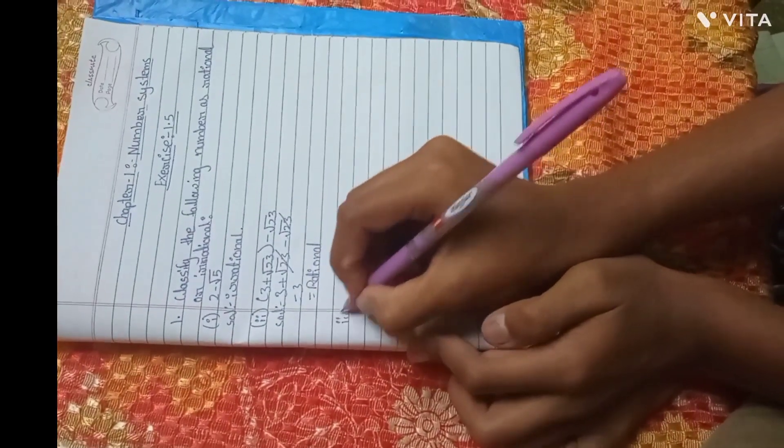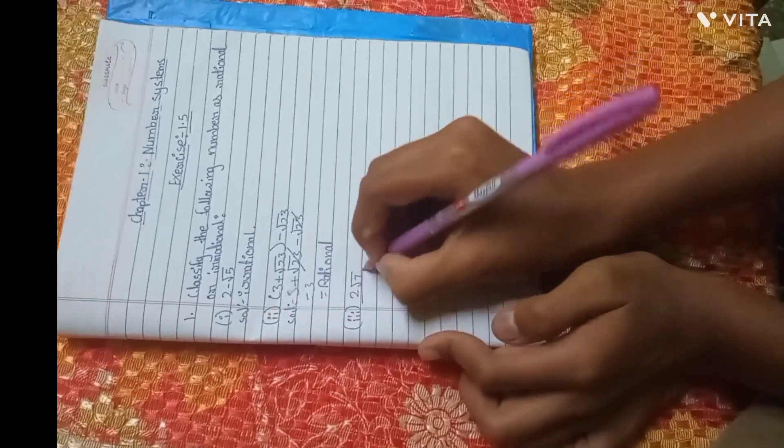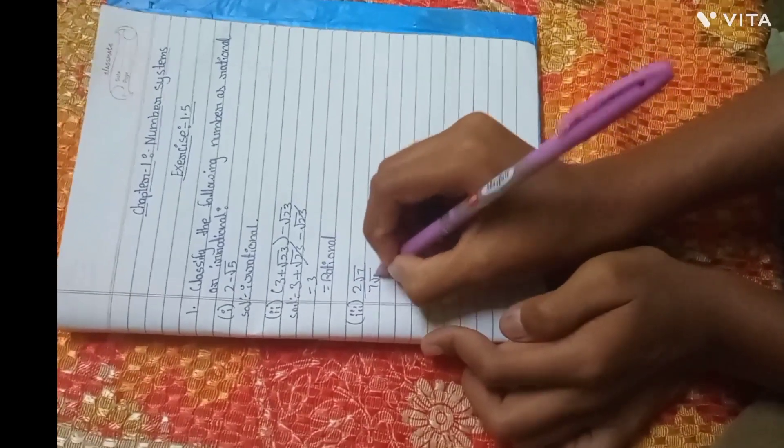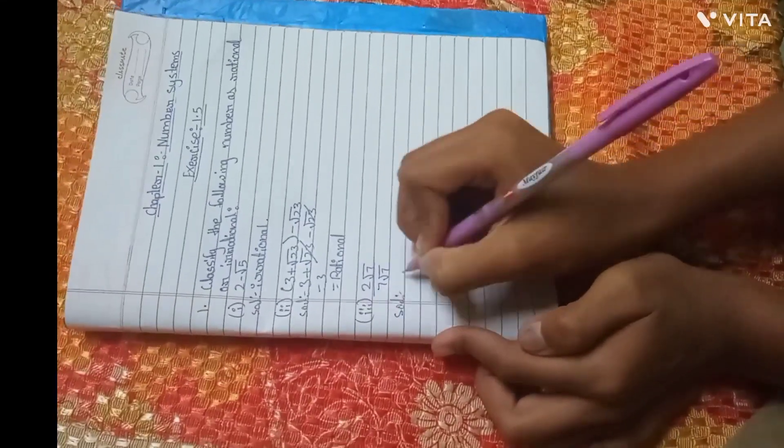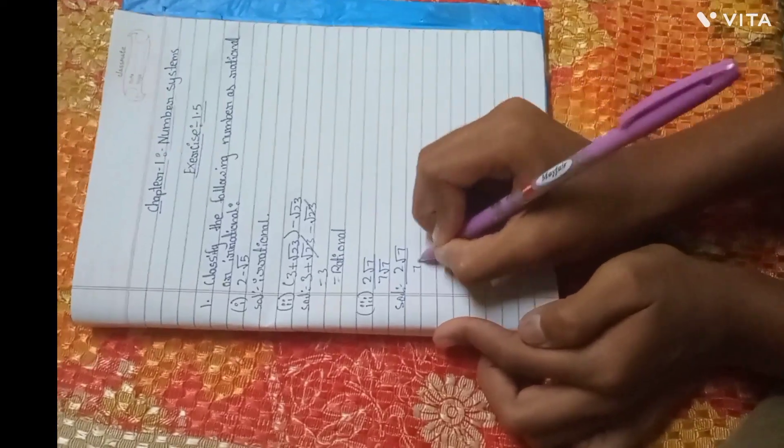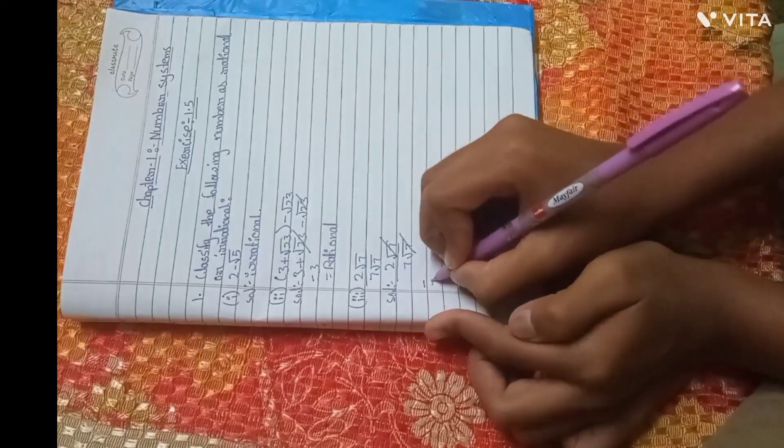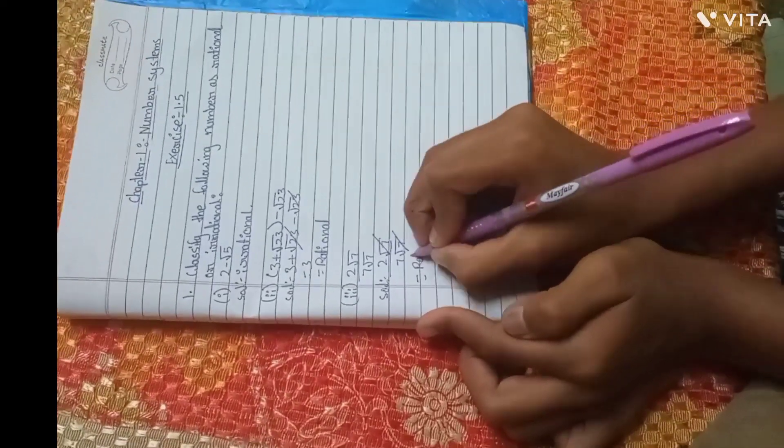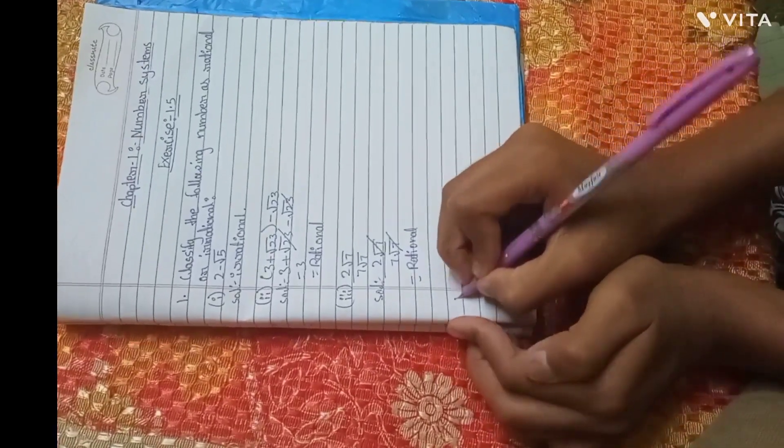Next we will write 2 root 7 by 7 root 7. Solution: We will write 2 root 7 over 7 root 7. Cut will be 7. Then we will write it rational.